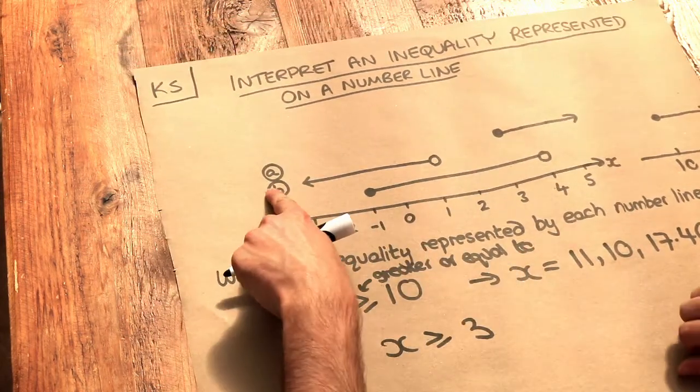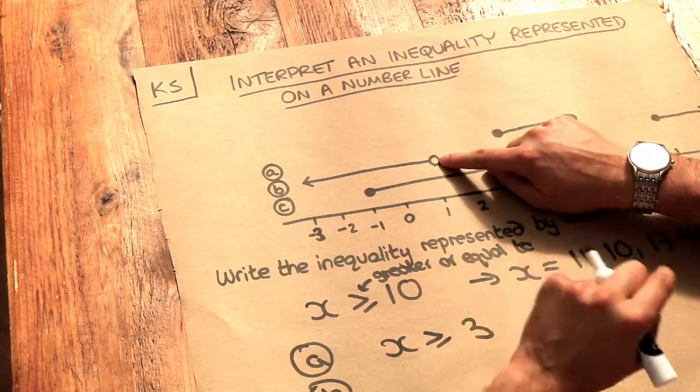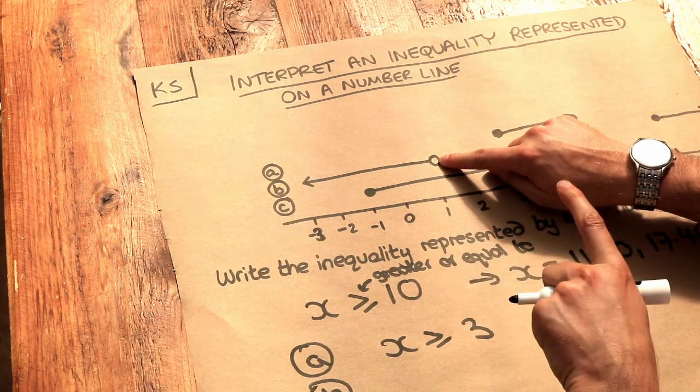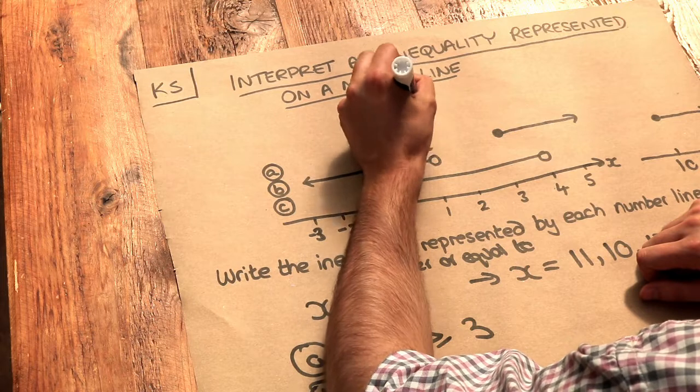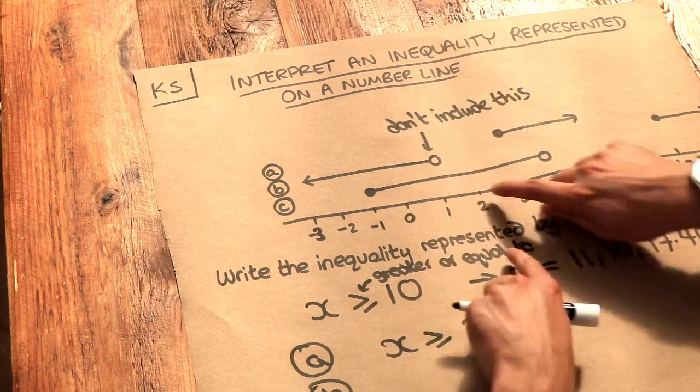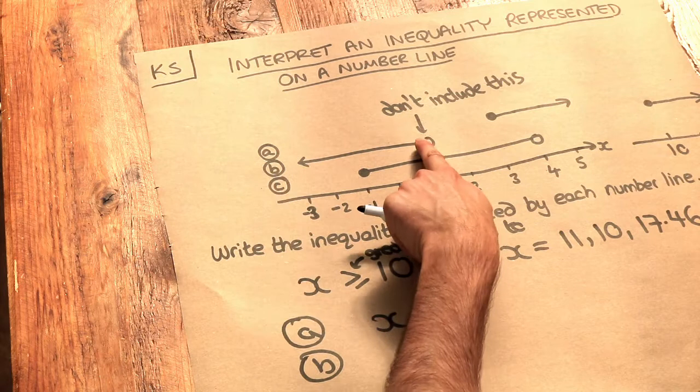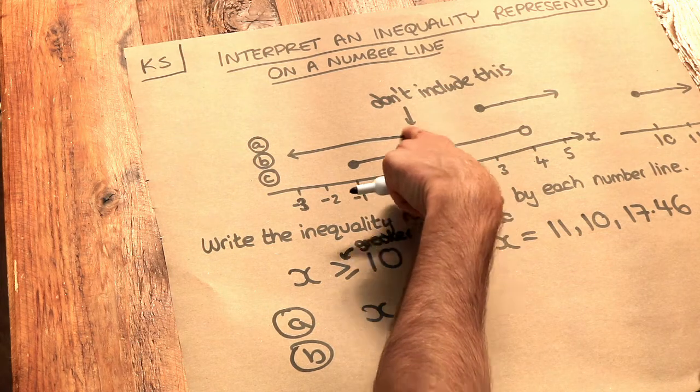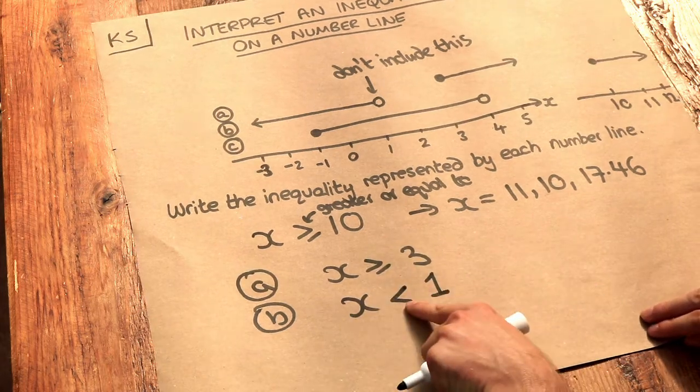What about the second one? Now for b, there's a circle again on 1, but this time the circle is not filled, it's unfilled. And what that's indicating is that x can't actually be that value itself. So we don't include that value itself. However, we can see there's an arrow pointing left, which means that x can be any value less than 1. But it can't be 1 itself, because we've got an open circle there. So x is less than 1, but not equal to 1.